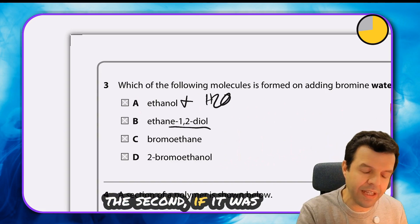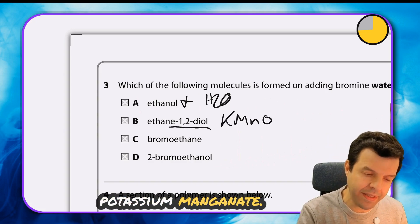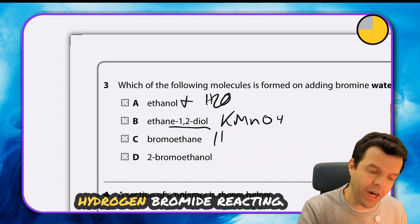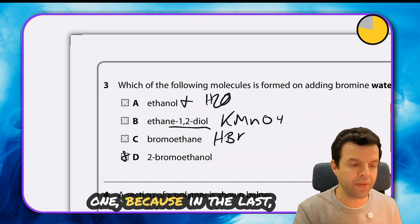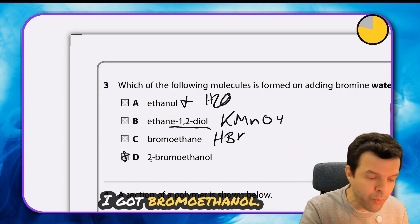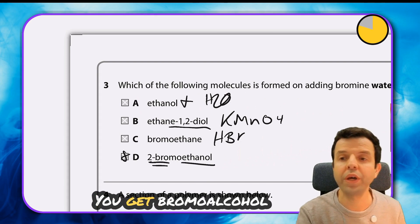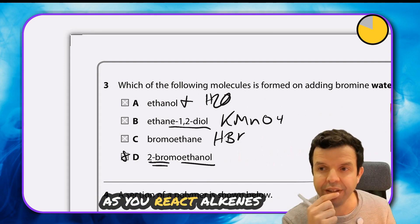The second is if it was potassium manganate, the third if you have hydrogen bromide reactant, and the last is the correct one because I got bromoethanol. You get alcohol as you react alkene with bromine and water, so you get that water part - alcohol - and bromine attached to it.